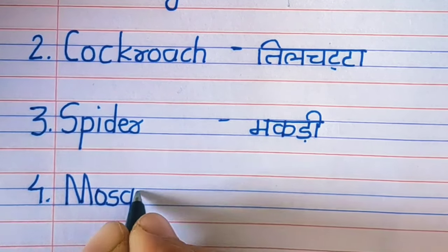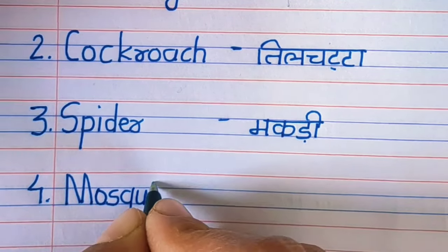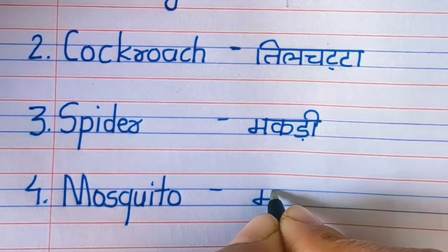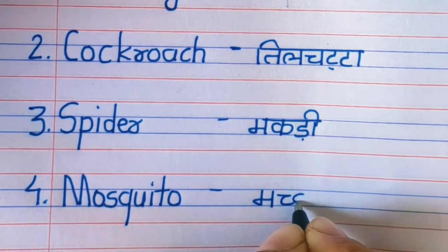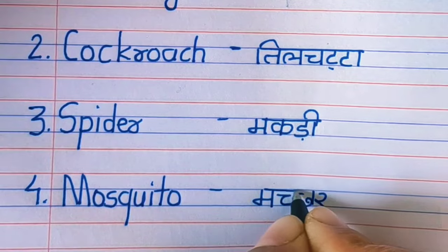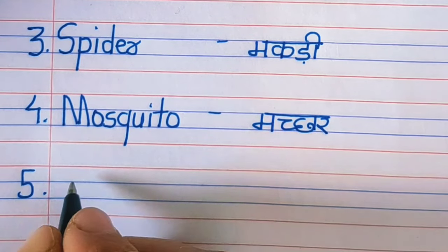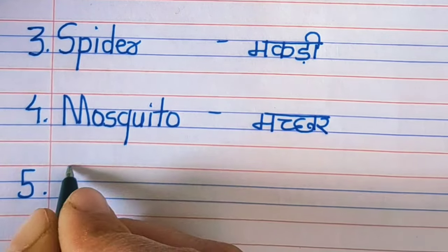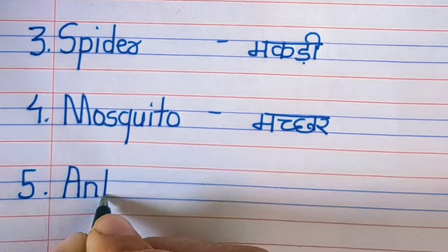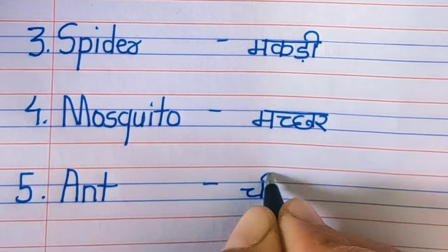Spider means makdi. Fourth: mosquito, M O S Q U I T O. Mosquito means machar.